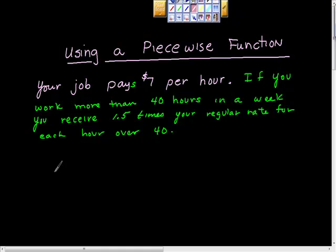I would start by asking, what is my pay based on the hours that I work? The first part is pretty simple: it's $7 times every hour that you work. In some ways it's a good job, because this is for x is greater than or equal to zero, but less than or equal to 40 hours.